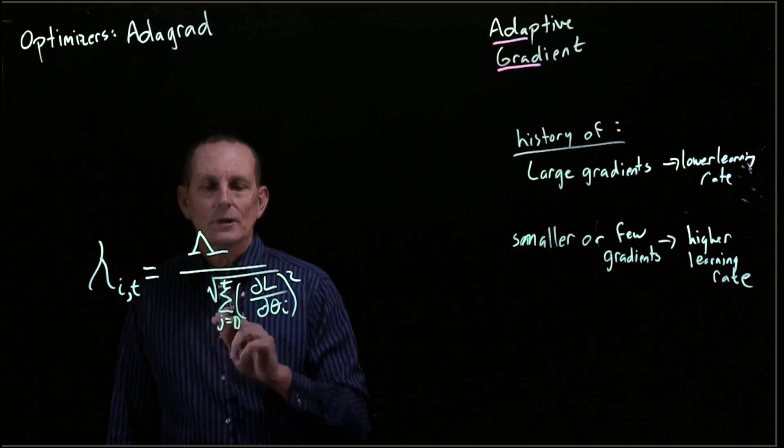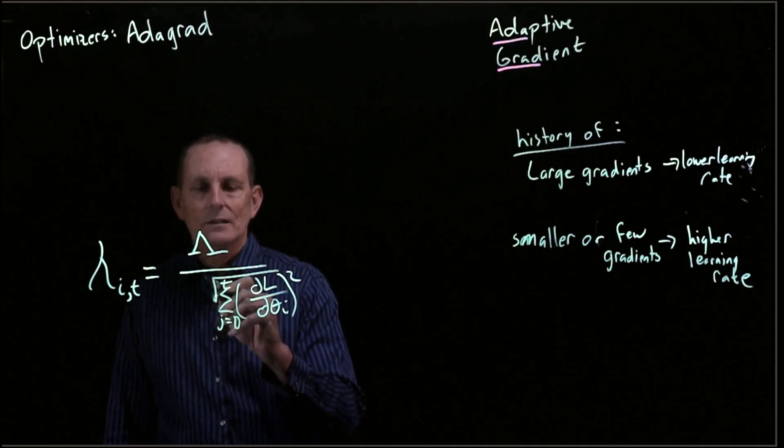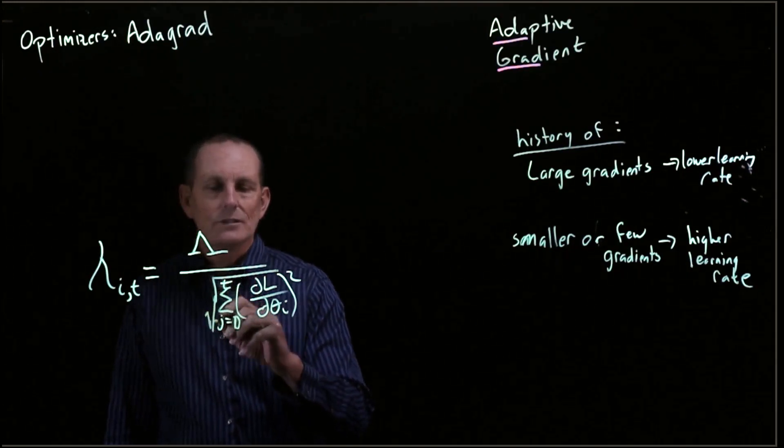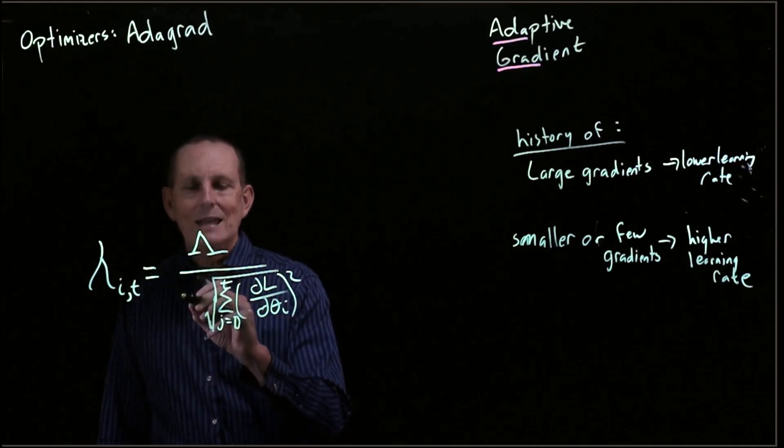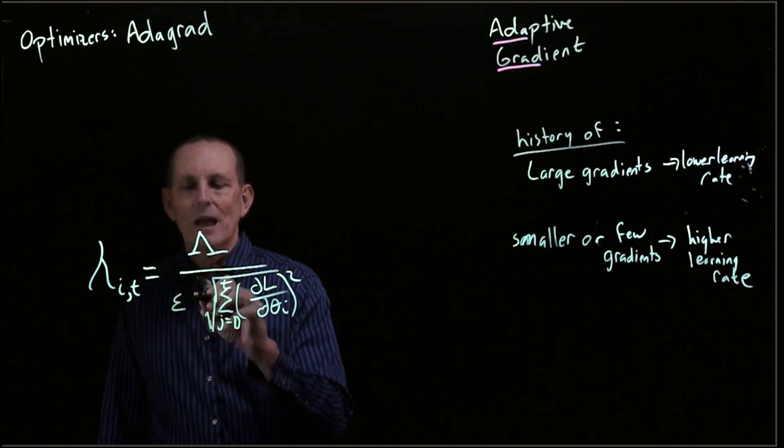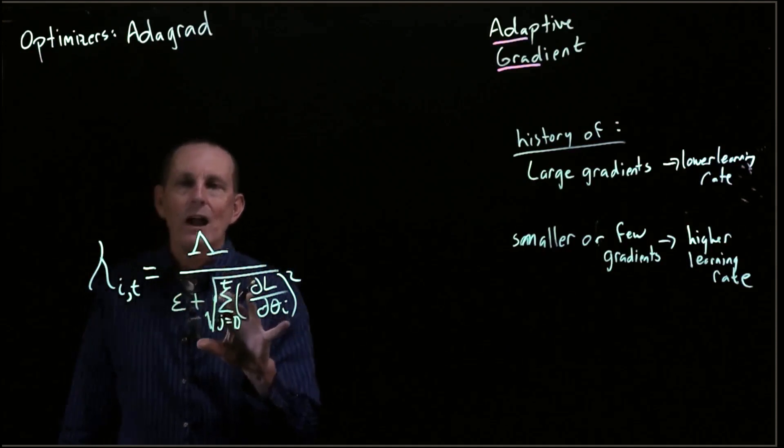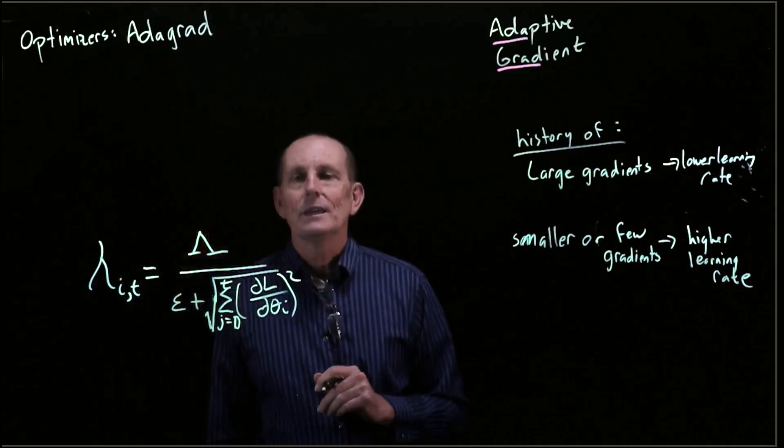First thing we're going to do here, just to be clear, the square root is of this whole summation. We're going to add some value here, some epsilon, just so we can never have a denominator that is 0.